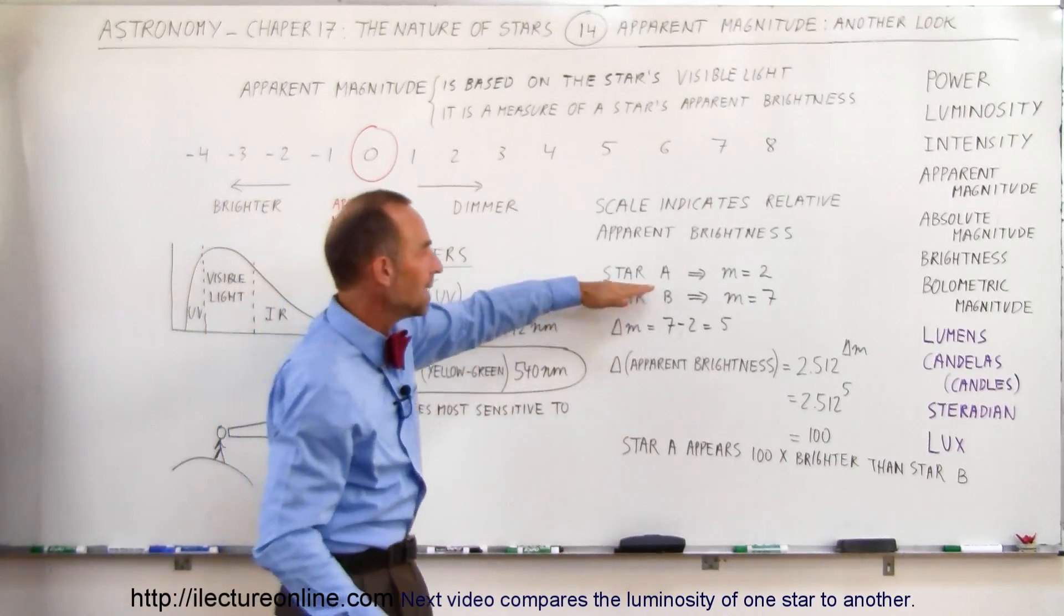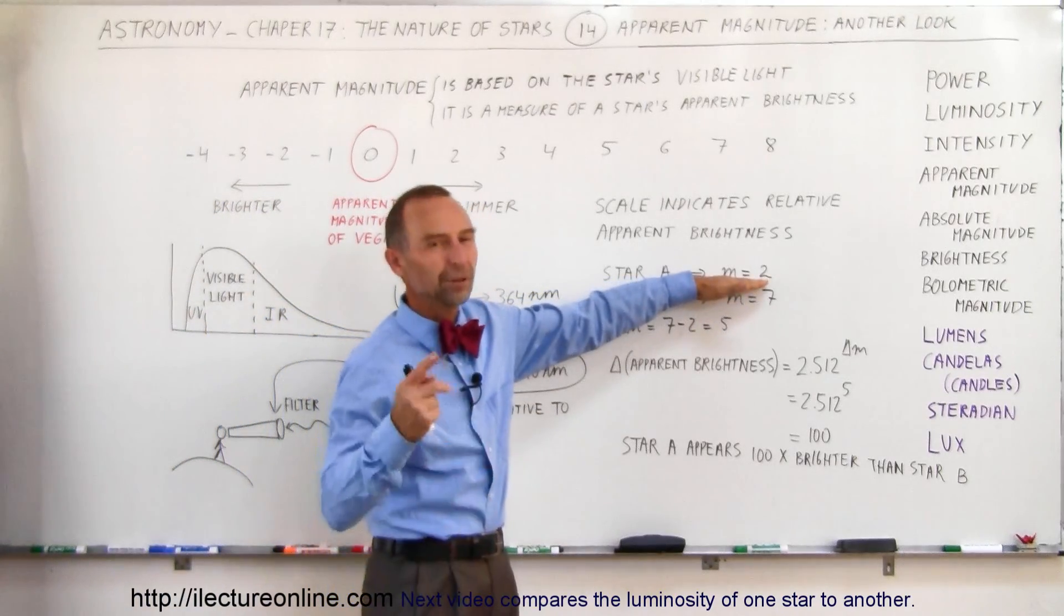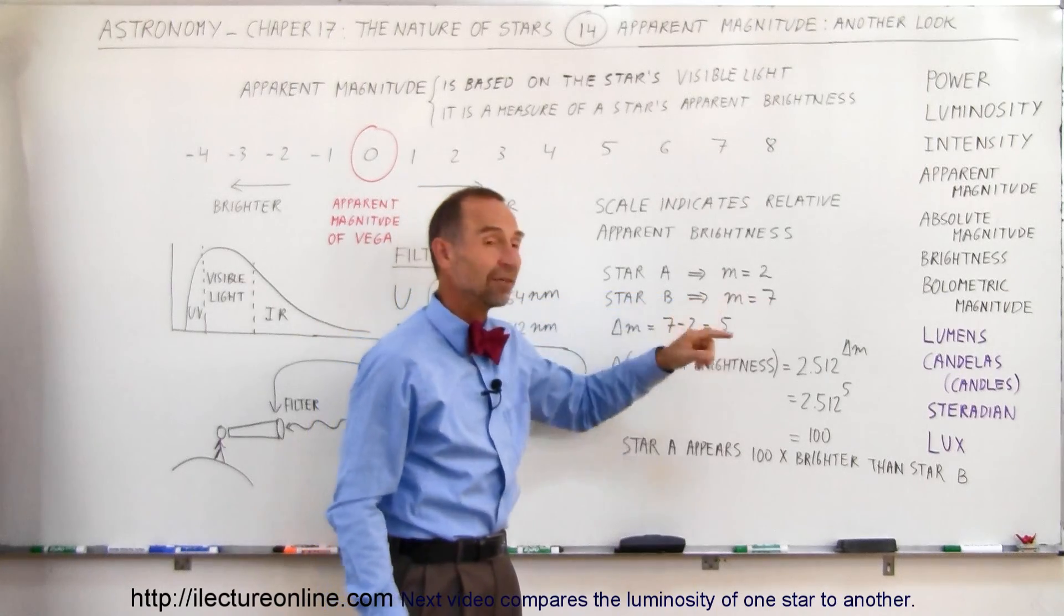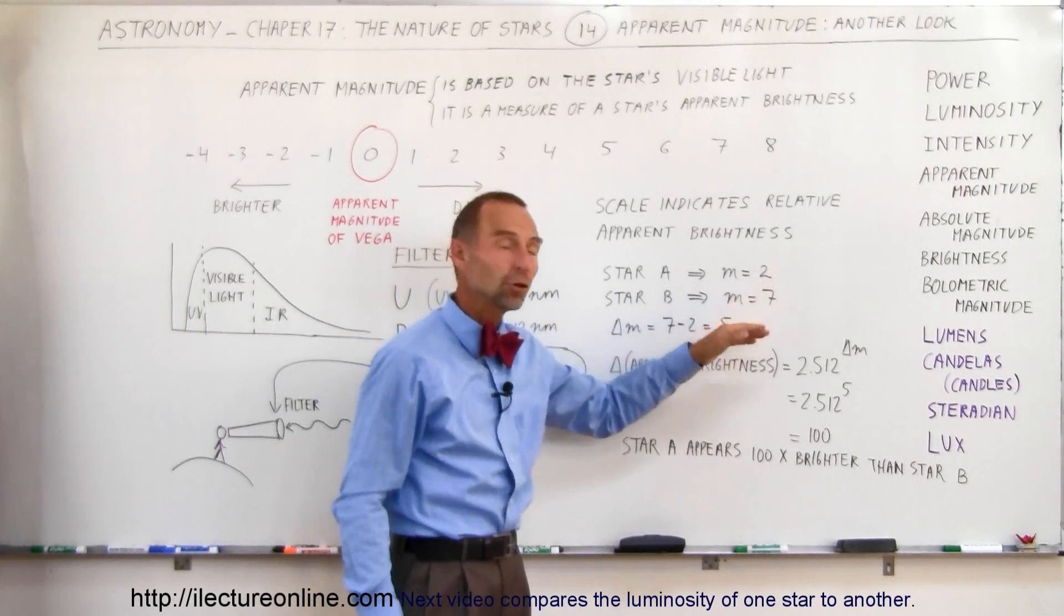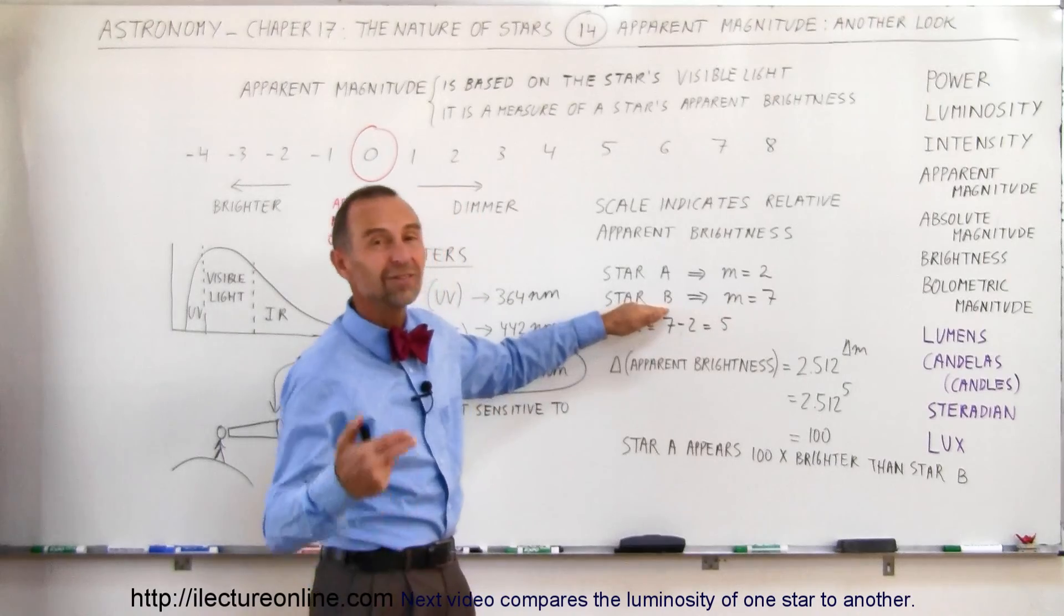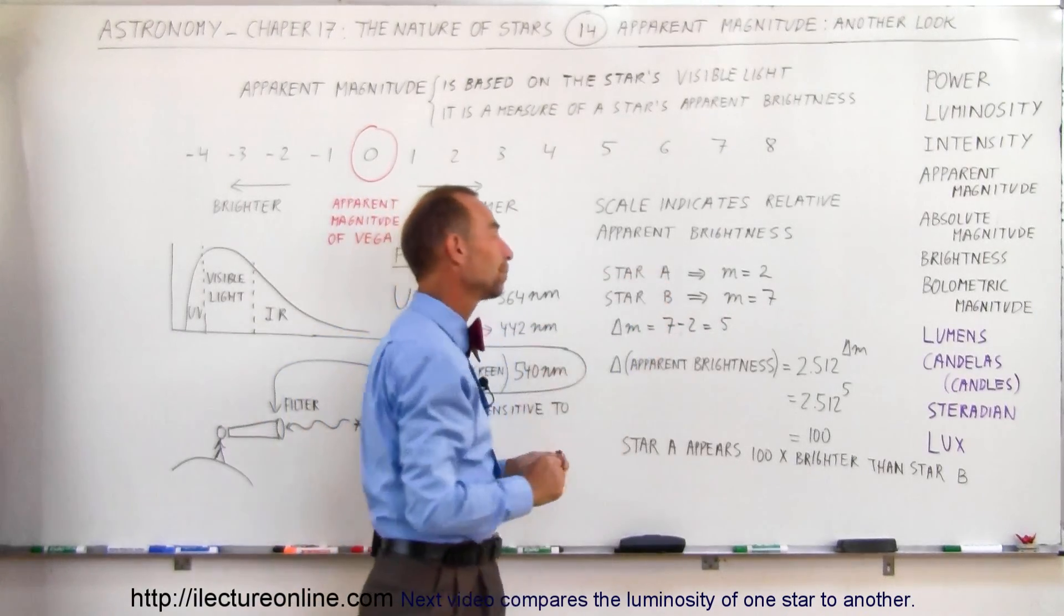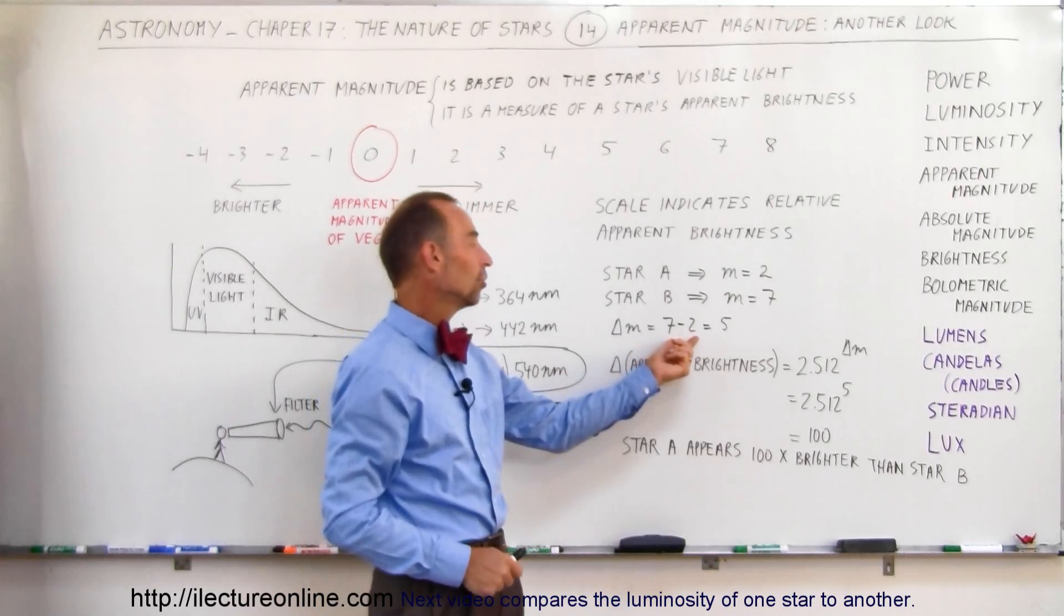For example, if we have star A with a magnitude or apparent magnitude of 2 and star B, apparent magnitude of 7, since 7 is a bigger number than 2, star B is a dimmer star, or at least it appears dimmer to us, than star A. When we take the difference in the magnitude, which is 5,